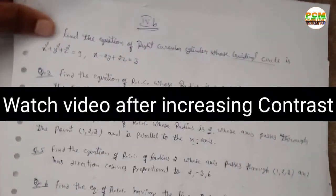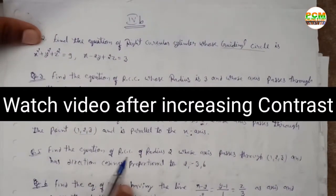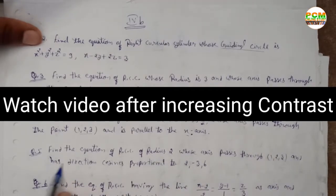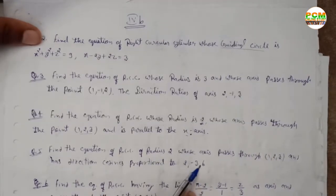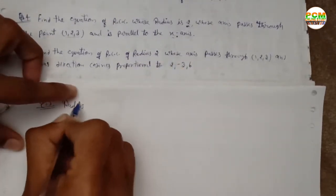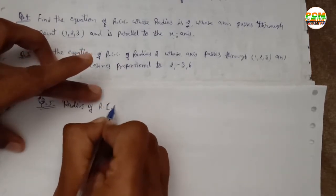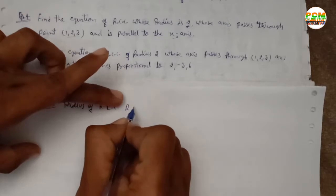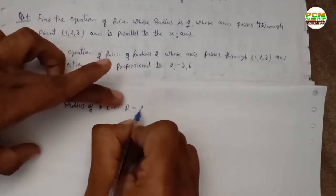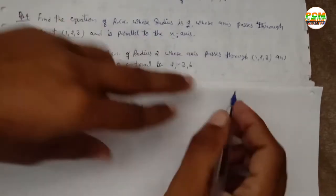Hello friends, welcome again. This is Prashan. Today I will discuss question number 5: find the equation of a right circular cylinder (RCC) whose radius is 2 and whose axis passes through the point (1, 2, 3).